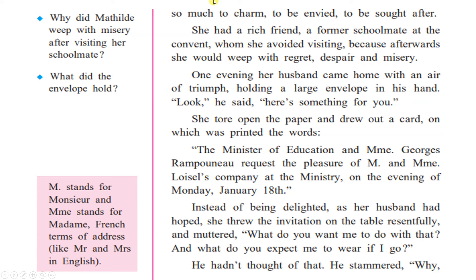She had a rich friend, a former schoolmate from the convent, whom she avoided visiting because afterwards she would weep with regrets, despair, and misery. All her friends had married rich people and had the richness and luxuries that Mathilde was longing for. She avoided meeting them because after visiting she would feel envious — how they had all the luxuries of life while she had none. So instead of crying afterwards, she avoided meeting her friend.